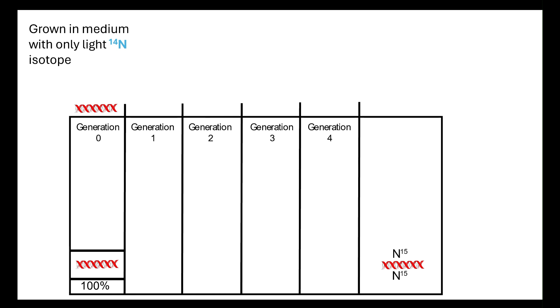Then we take that generation zero and we now grow it in a medium which only allows the light N14 isotope. What then happens is the hydrogen bonds are broken between the two strands. The free nucleotides now only have the light isotope and therefore, what we end up with is our new strand being built with N14 and our original strand having N15.